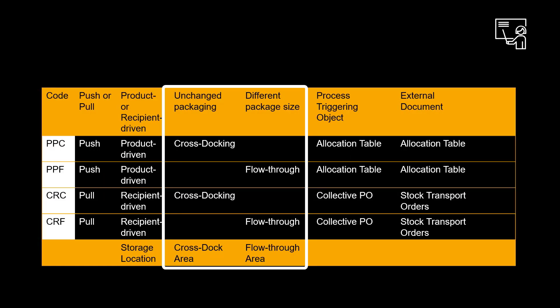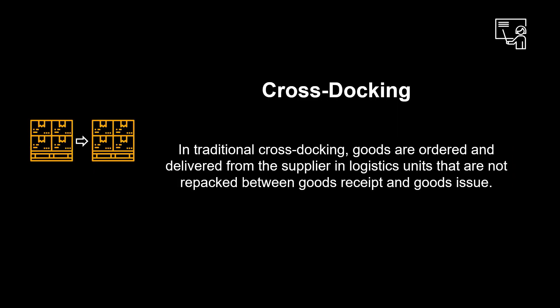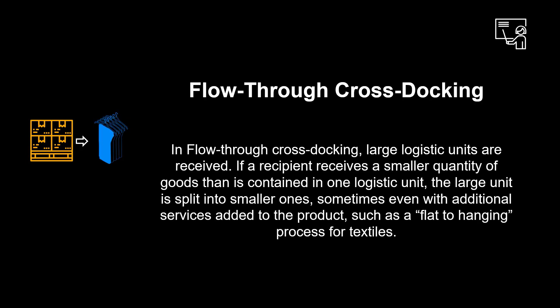The terminology cross-docking is sometimes used interchangeably with the term flow-through. In traditional cross-docking, goods are ordered and delivered from the supplier, and logistics units are not repacked between goods receipt and goods issue. In flow-through cross-docking, large logistic units are received. If a recipient receives a smaller quantity than is contained in one logistic unit, the large unit is split into smaller ones, sometimes with additional services such as a flat-to-hanging process for textiles.